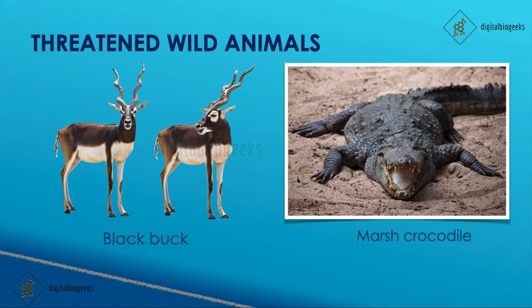Some threatened wild animals such as the blackbuck and marsh crocodile are protected in wildlife sanctuaries, where human activities are restricted. Ownership of sanctuaries lies either with the government or with a person or organization, provided the regulations are governed by the government. Cutting of trees and killing of animals are strictly prohibited, but people can visit sanctuaries for educational and research purposes.